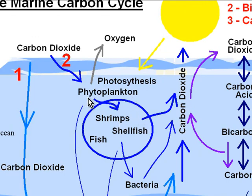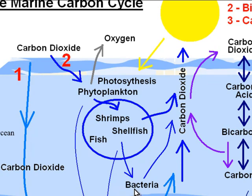Now some of the phytoplankton or algae will die, and some of the shrimps, shellfish, and fish will die. As they sink to the bottom of the ocean, they decay — the bacteria eats them, biodegrades them — and the bacteria once again breathe out carbon dioxide, which can find its way out of the ocean back into the atmosphere again. So that was the biological pump.